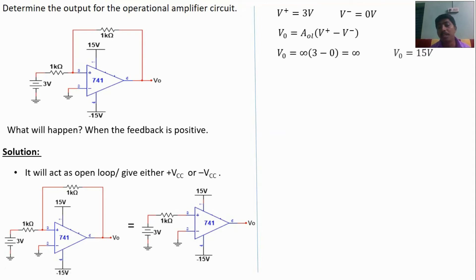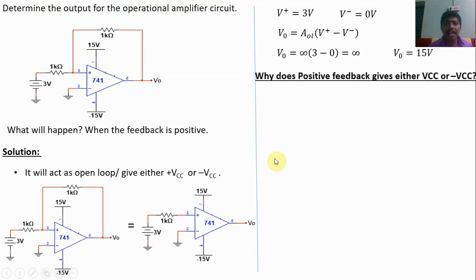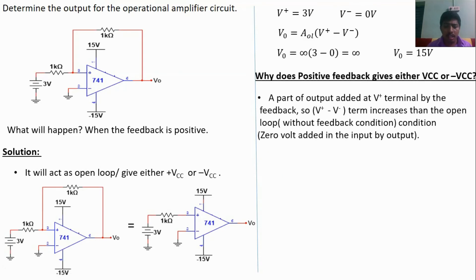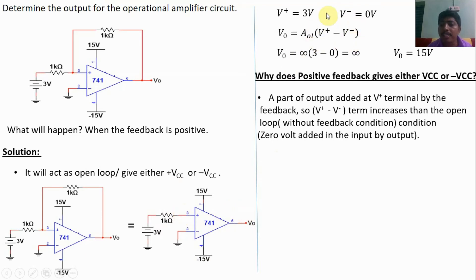So the output is plus 15 volts. Why does positive feedback give either plus Vcc or minus Vcc? In open loop configuration, V plus is 3 volts, V minus is 0 volts, V naught is 15 volts. If this V naught is connected to the plus terminal, the output will try to increase the term V plus minus V minus, so V naught tries to increase beyond 15 volts.